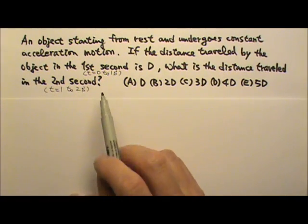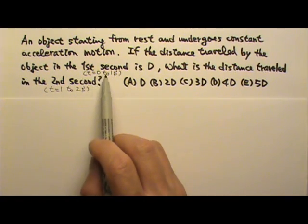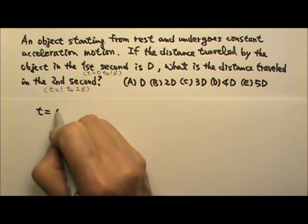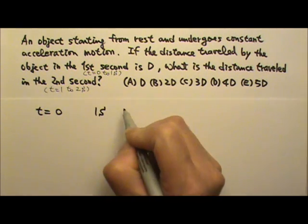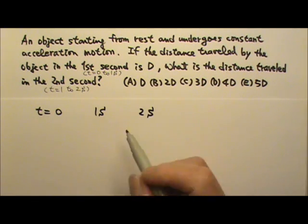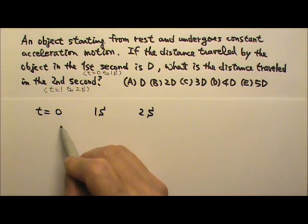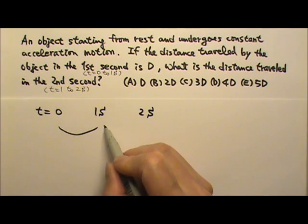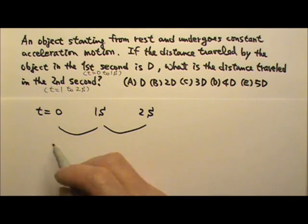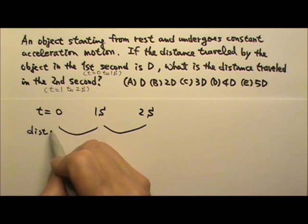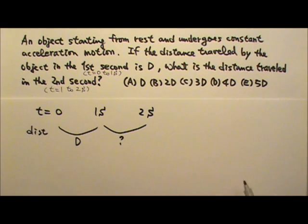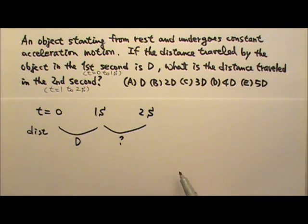Now this problem talks about t equals 0 to 1 and 1 to 2. So let's say the time starts at 0, 1 second, 2 seconds. This is the 2 seconds. This is the 1st second. This is the 2nd second. So if you look at the distance traveled, it says the 1st second, the distance traveled is d. And we want to find the distance traveled in the 2nd second.